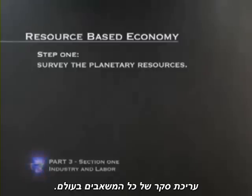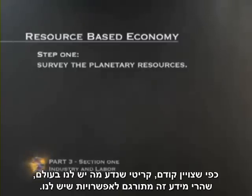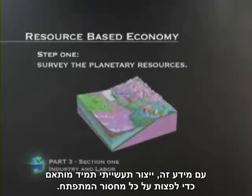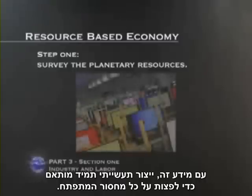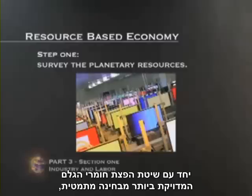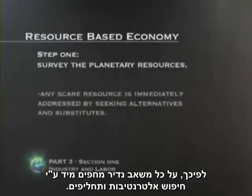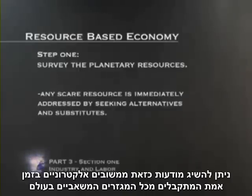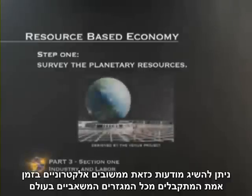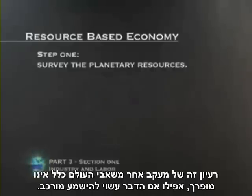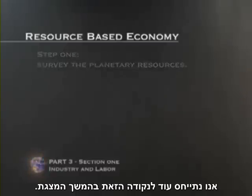Step 1: Survey the planetary resources. As denoted before, it is critical that we know what we have on this planet, for that translates into what the possibilities are. With this information, industrial production is always adjusted to compensate for any emerging scarcity, along with the most mathematically appropriate raw material distribution based on availability and most relevant application. Any scarce resource is thus immediately addressed by seeking alternatives and substitutions. This awareness can be obtained by real-time electronic feedback coming from all resource sectors of the planet, fed into a central computer database that monitors any growing scarcity or problem. This idea of resource monitoring is not at all far-fetched, even if it might sound complex.